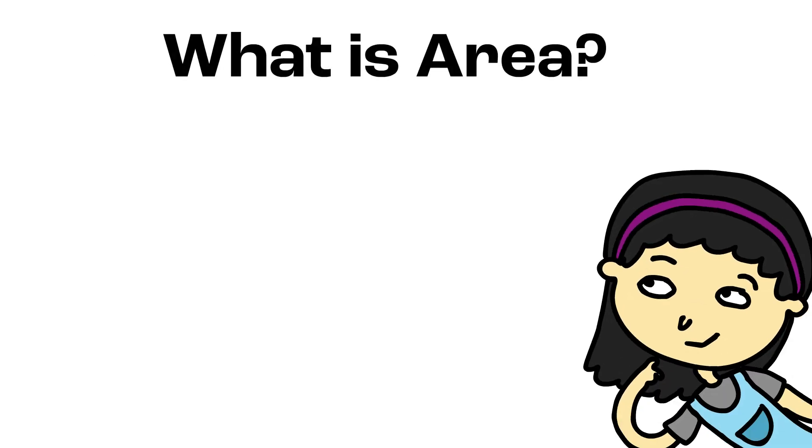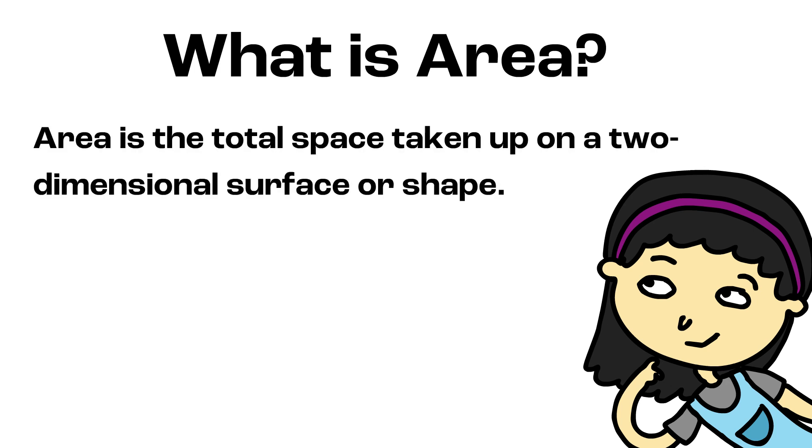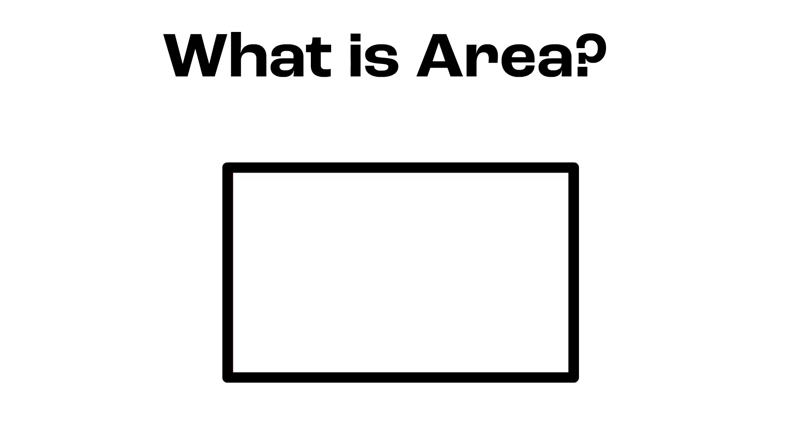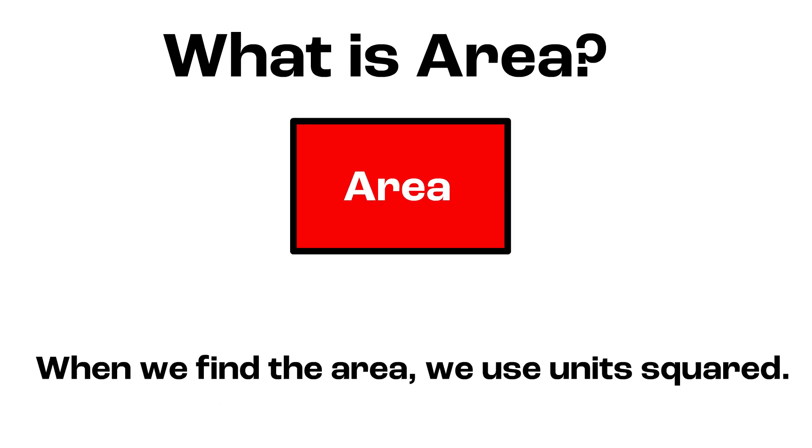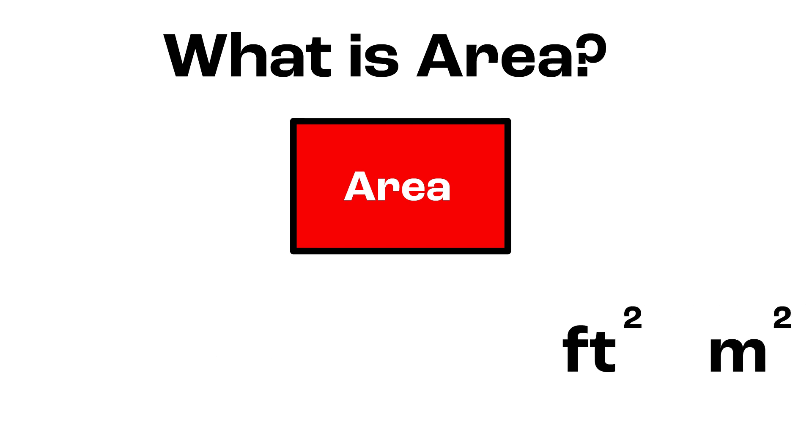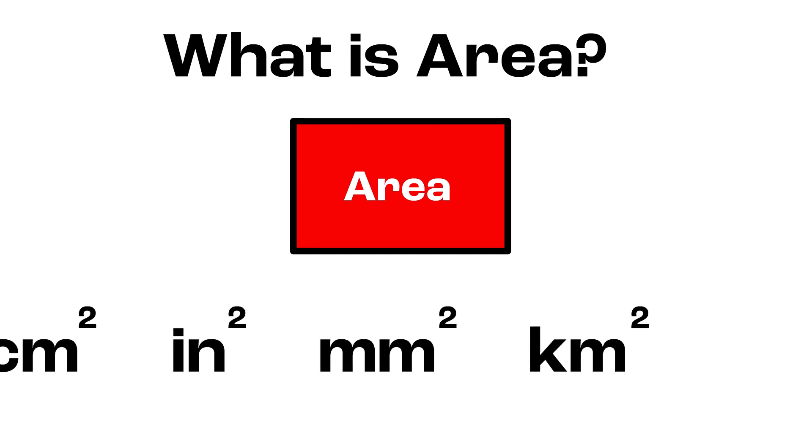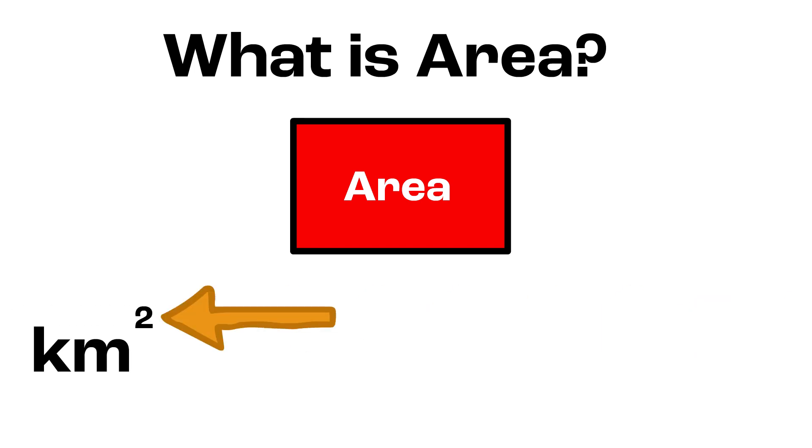So, what is area? Area is the total space taken up on a two-dimensional surface or shape. Within the boundary of a shape, the total space that is taken up is the area. When we find area, we use units squared. This means that the units that describe the area have a little two on the upper corner.